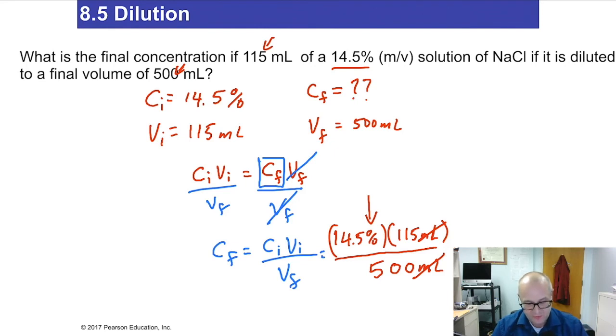So let's grab out your calculator. 14.5 multiplied by one, one, five. Let me do that again. Divide it by 500. The final answer is 3.34%. Now, I rounded it. Your calculator may have given you like 3.335. That's fine. We're not worried about rounding at this time. We're just worried about, do you kind of get the idea of how to solve this question? So it's 3.34%, which is indeed lower than 14.5, which means the logic works. You added volume, concentration came down. That's pretty cool.